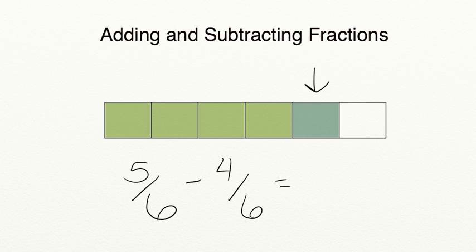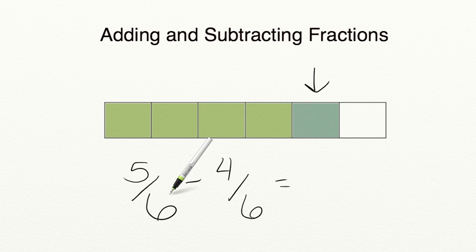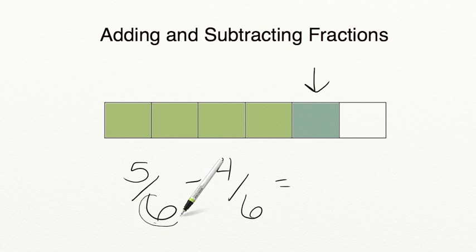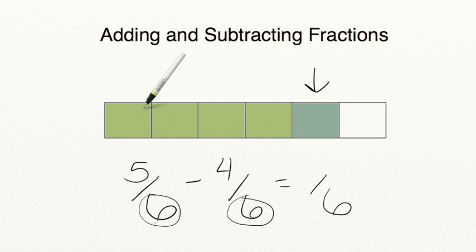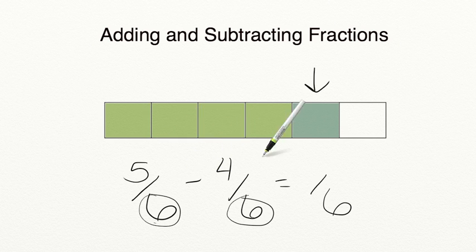Just like addition, you won't always have a fraction bar to use. So if you're just subtracting two fractions, you first need to make sure that your denominators are the same. Since we're dealing with sixths — five-sixths minus four-sixths — we keep our denominator the same, because we're not changing the size of our pieces, and we subtract the numerators: five minus four equals one-sixth.